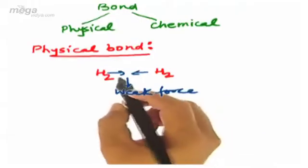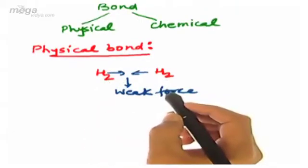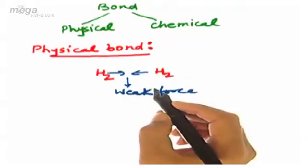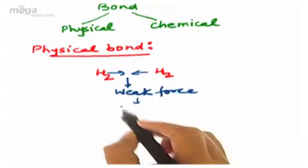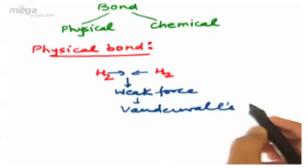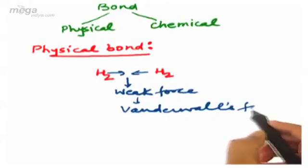So remember that whenever species approach each other and when there is no electronic involvement between the two, and when they are held through a weak force called van der Waals force, then in that case we call the force to be physical force and the bond is called as physical bond.